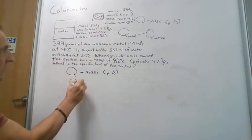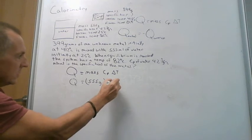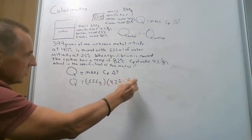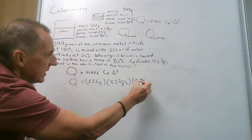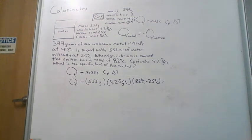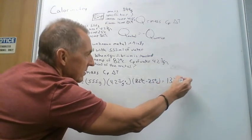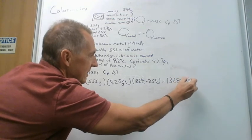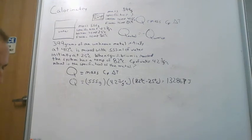So Q of the water equals 555 grams times 4.2 joules per gram per degree Celsius times the change in temperature, which is 82 degrees Celsius minus 25 degrees Celsius. Plugging that into the calculator gives 132,867 joules. Our temperature change is positive, so our energy change is positive as well, meaning we have an endothermic process — the water is absorbing energy.